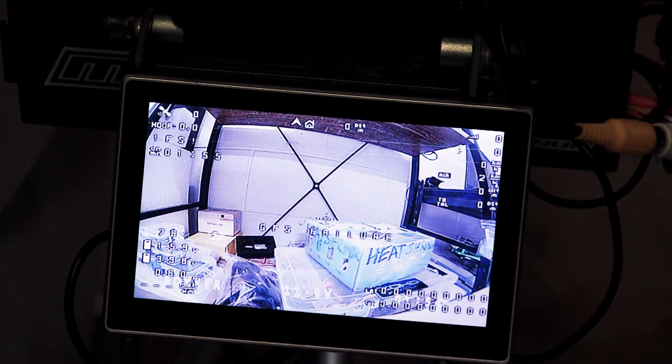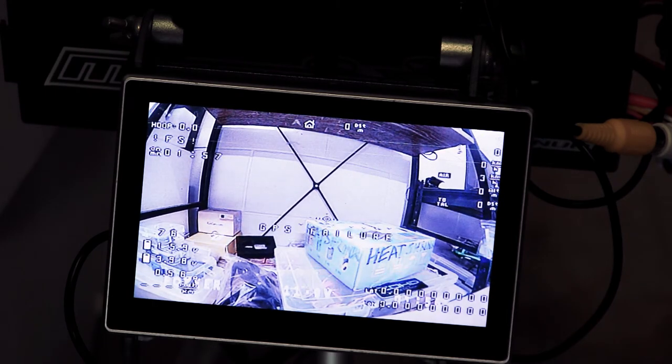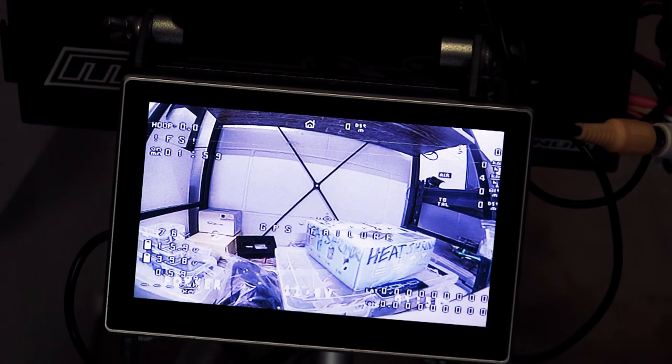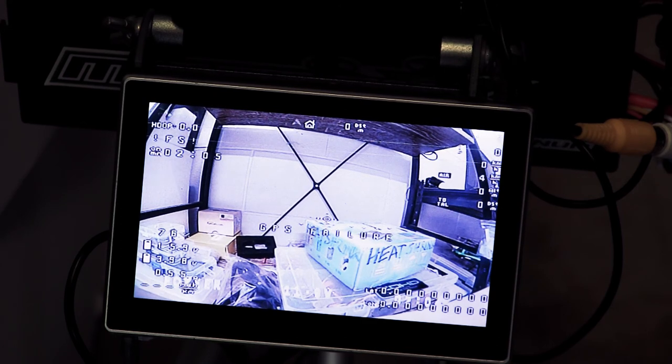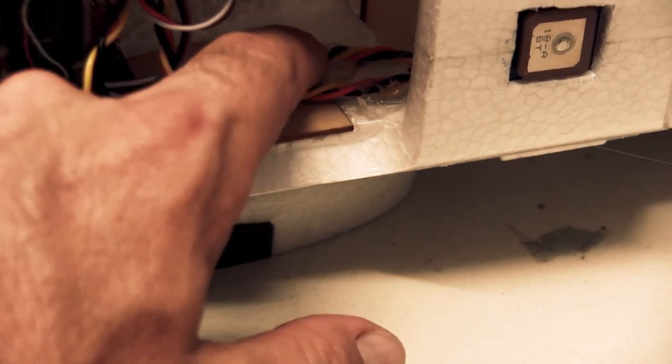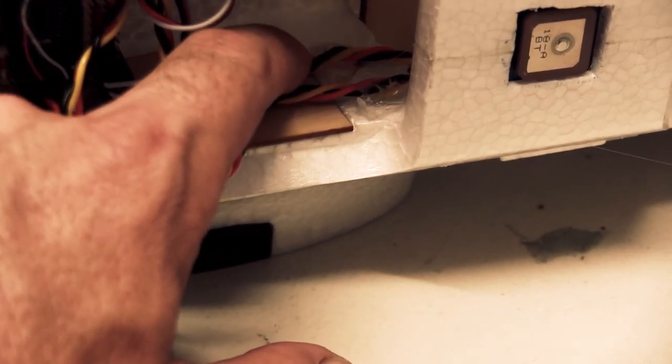So you always check stuff too before you glue things in, before you finalize positioning things. Check things first, make sure they work, and they're working 100%, and then you glue things in, or you set them in place. That just saves you from taking apart, messing up your work when you find out something doesn't work, because you never tested it properly originally.